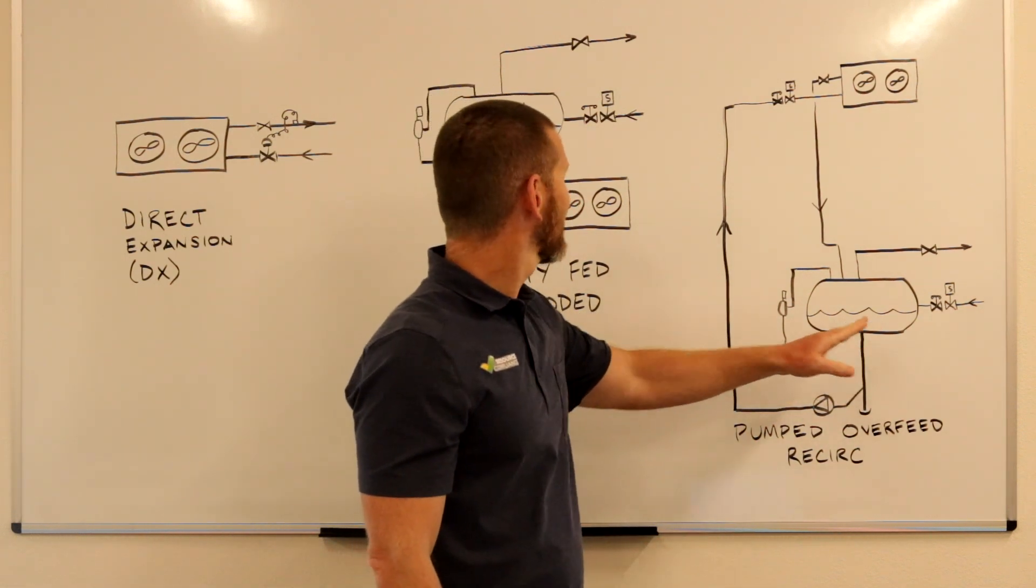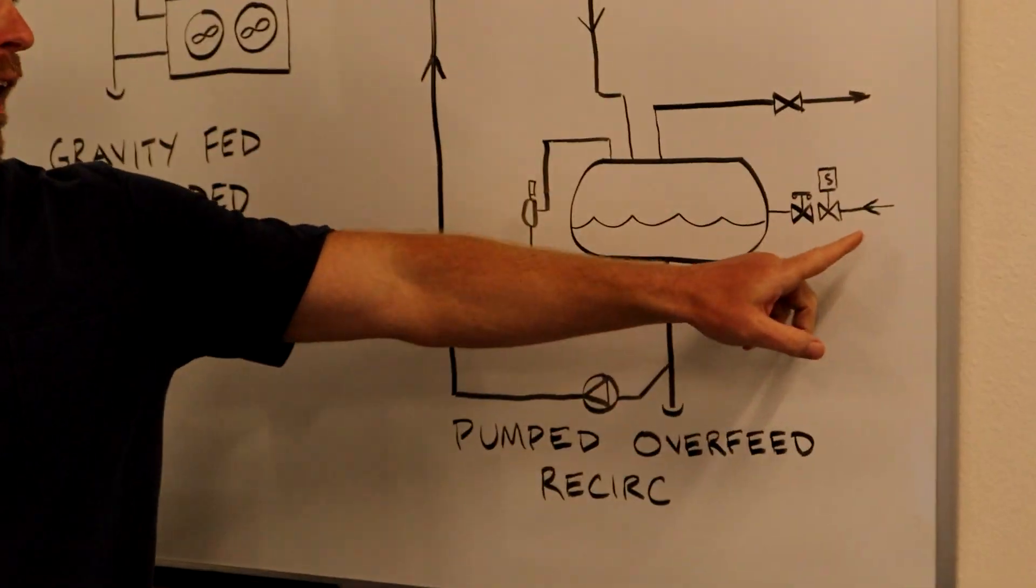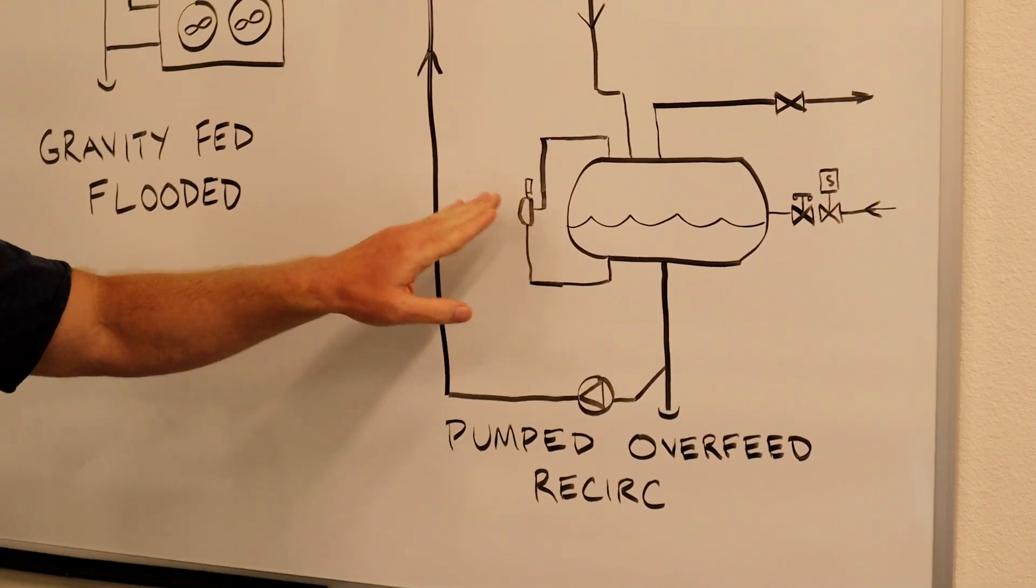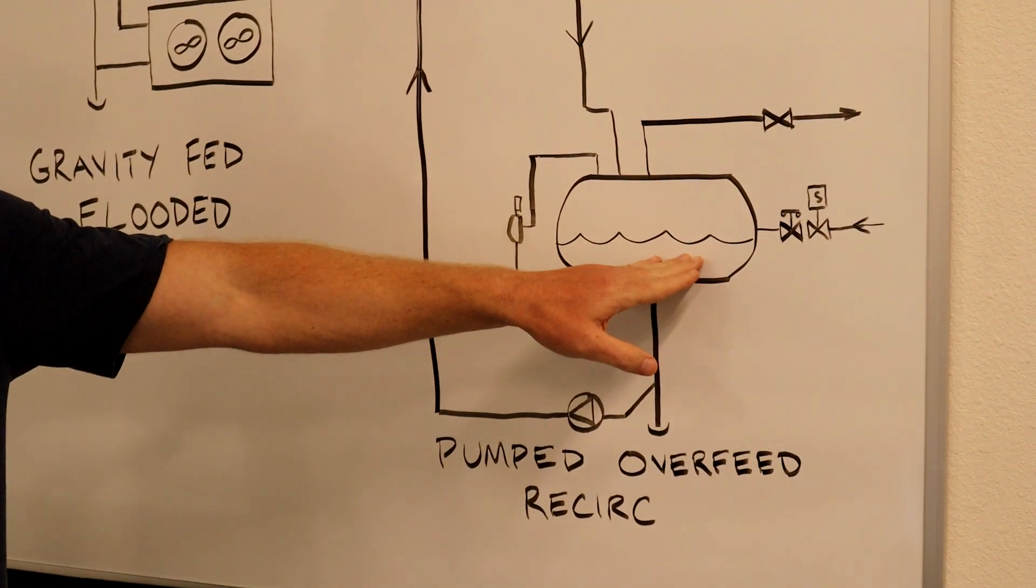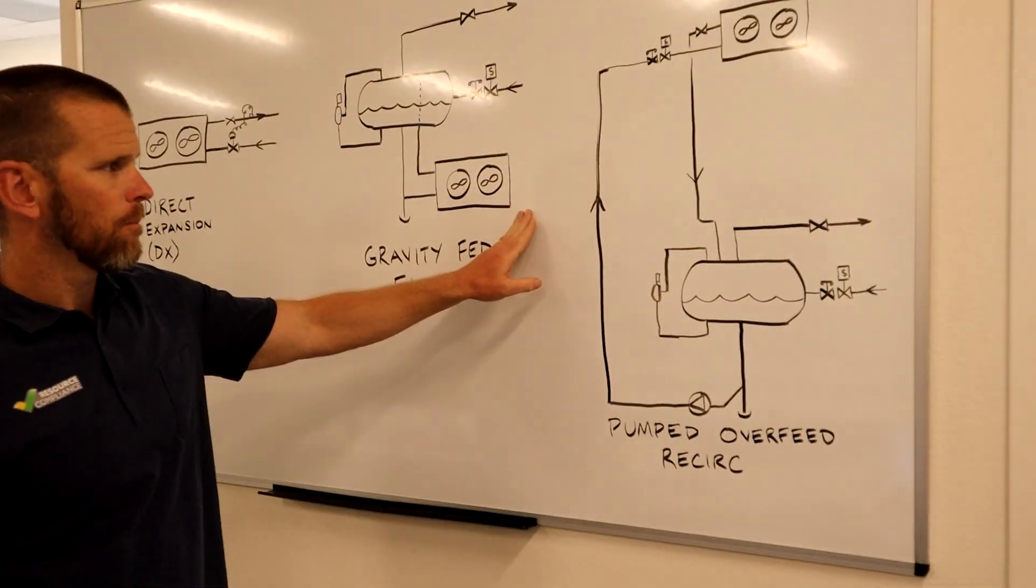But just like the gravity flooded system, this is a solenoid valve that opens and closes based on a float switch to maintain a liquid level. But in this case, rather than feeding liquid by gravity as we did in the flooded system...